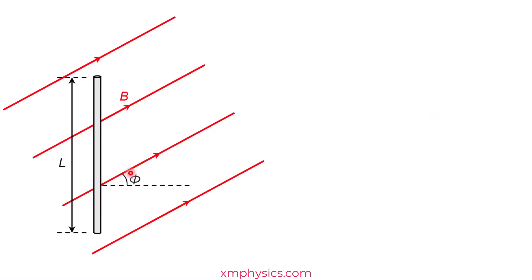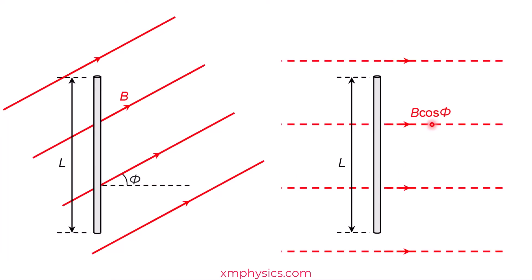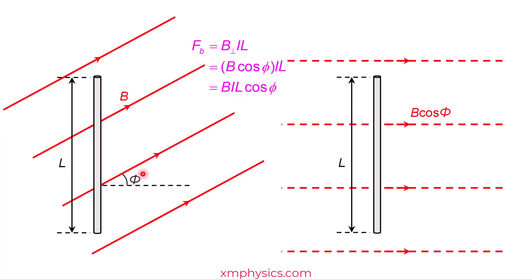Sometimes you'll be given the other angle, phi. Same approach — figure out the component of the magnetic field that's perpendicular to the rod. This time it's going to be B cosine phi, and the magnetic force will be BIL cosine phi. Quick check: if phi is zero, you get BIL. When phi is zero, the magnetic field is perpendicular to the rod, and yes, the magnetic force is BIL. So we are done with the magnitude of the force.